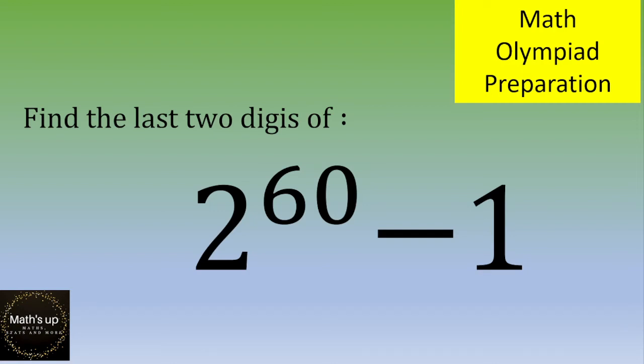Hello and welcome. In this video, we have an exercise to get ready for the math Olympiad. You want to find the last two digits of 2 power 60 minus 1. If you want to give it a try, please pause the video. Otherwise, let's see the solution.